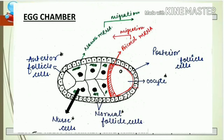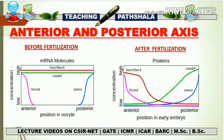Now let's talk about two more maternal genes: hunchback and caudal. Before we dealt with bicoid and nanos; now we deal with hunchback and caudal. All four genes — bicoid, nanos, hunchback, and caudal — are regarded as maternal genes.